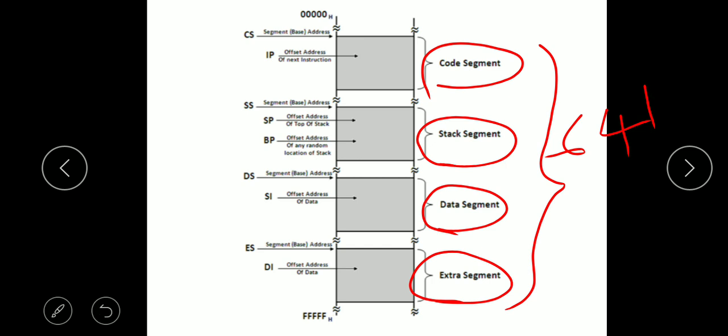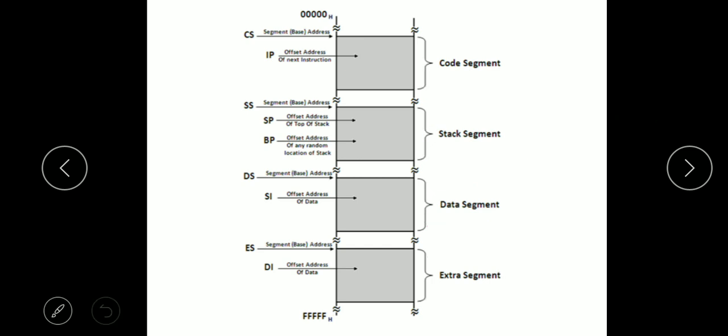Offset means like a normal base address within every segment. The starting memory location of a segment is the base address. For example, a segment might start at address 0002 and end at FFFF — that is 16-bit, representing 64 kilo-locations in length.